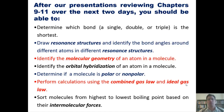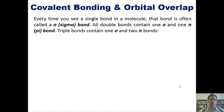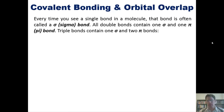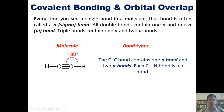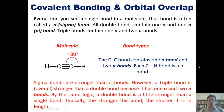Let's get started with covalent bonding and orbital overlap. Every time you see a single bond in a molecule, that bond is called a sigma bond. All double bonds contain one sigma and one pi bond; triple bonds contain one sigma and two pi bonds. For example, a carbon-carbon triple bond contains one sigma and two pi bonds, while a carbon-hydrogen single bond contains one sigma bond.